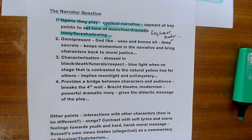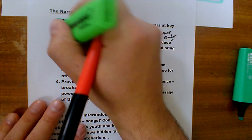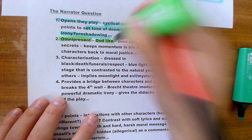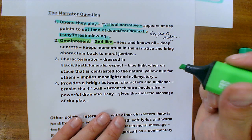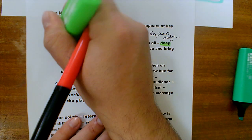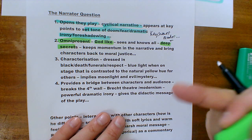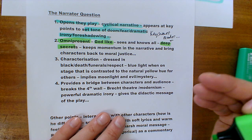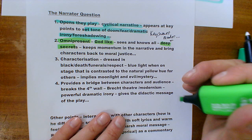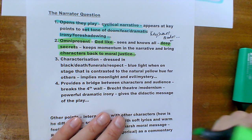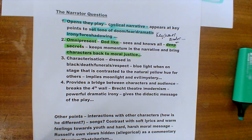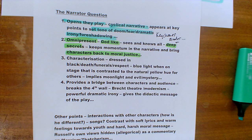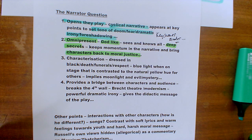We also need to consider that the narrator is omnipresent and omnipotent — almost godlike, seeing all, knowing all, seeing the deep secrets of all the characters — and he keeps the momentum going in the play. He keeps the narrative moving onwards toward the inevitable tragic consequence and brings the characters back to moral justice — this idea that in a utilitarian society there must be consequences to actions and people must be held to account for their sins.